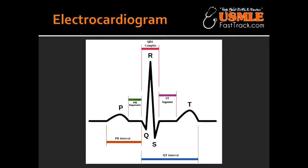What does T wave inversion indicate? T wave inversion indicates a recent MI. What is the ST segment? The ST segment is an isoelectric point when the ventricles are depolarized. What causes the U wave? The U wave is caused by hypokalemia and bradycardia.